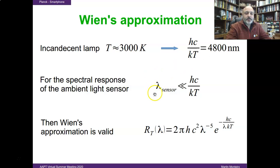So, for the wavelengths where the ambient light sensor is sensitive, the condition for Wien's approximation is true. So, Wien's approximation could be applied,